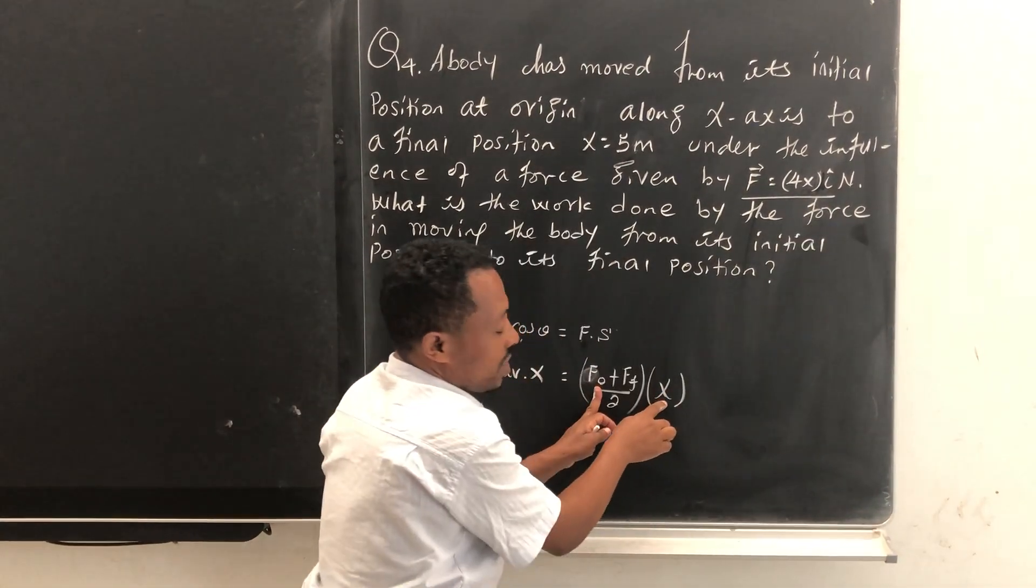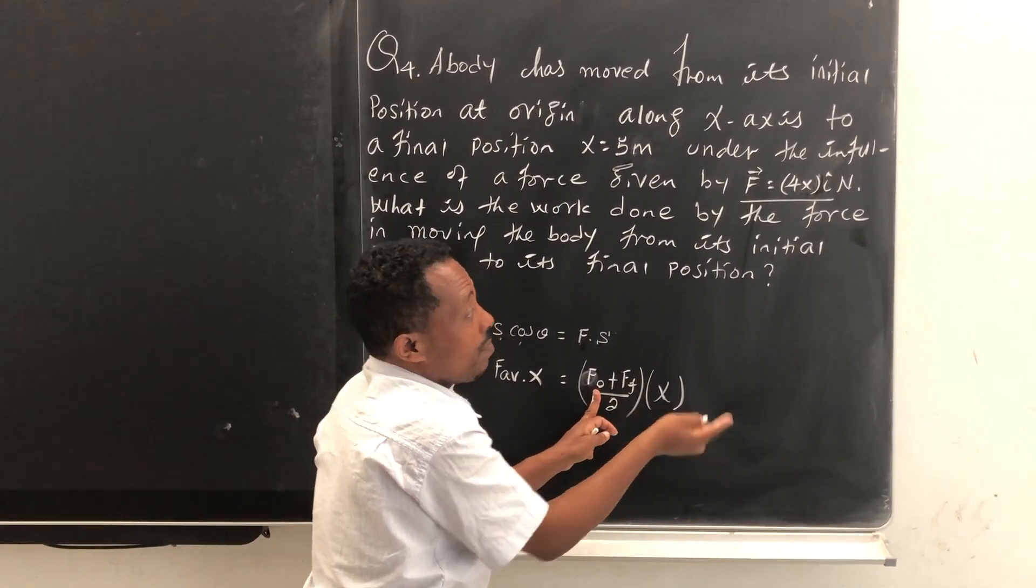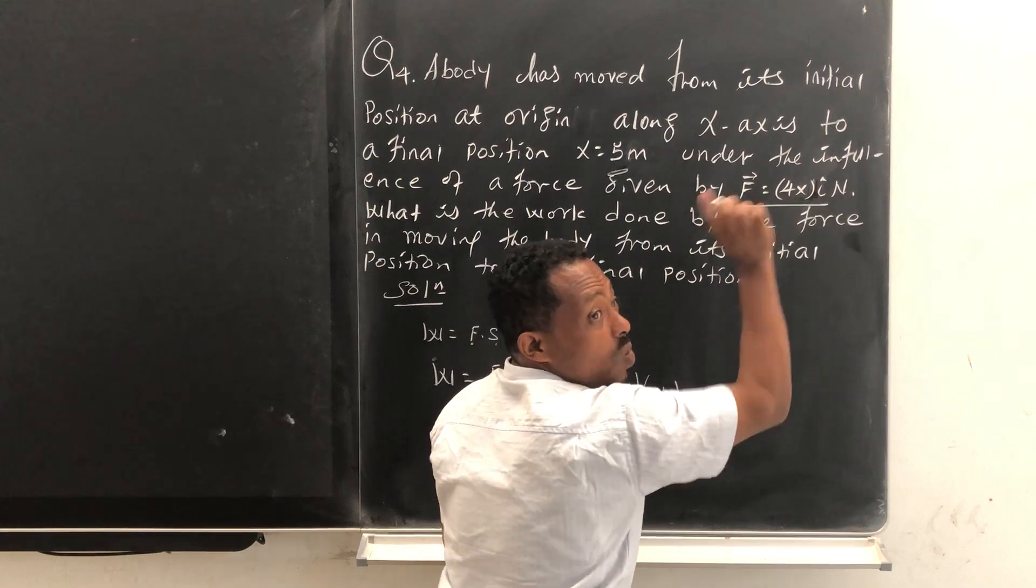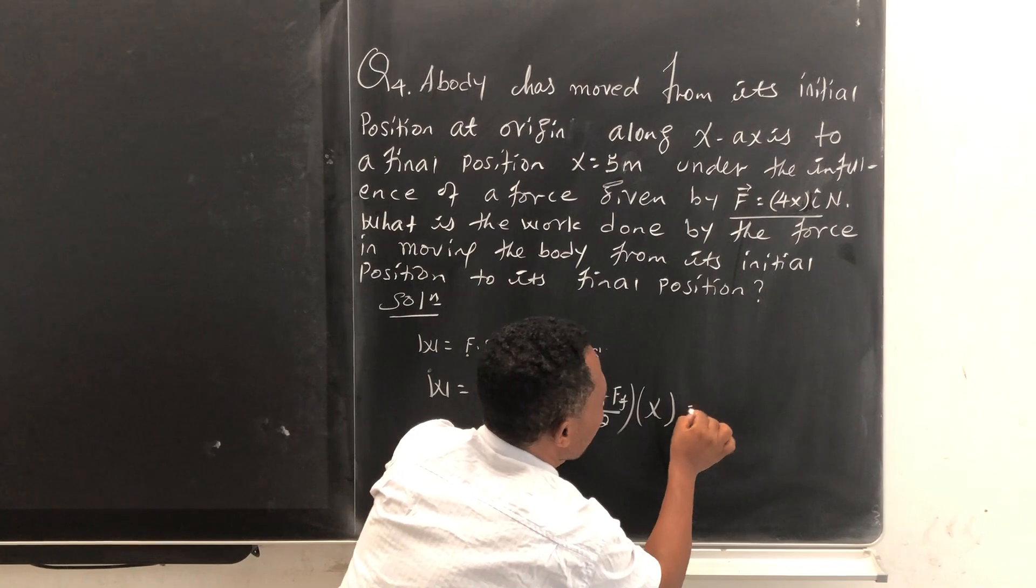And now since the direction of X and F are the same, i dot i is one. Don't forget, i dot i is one.